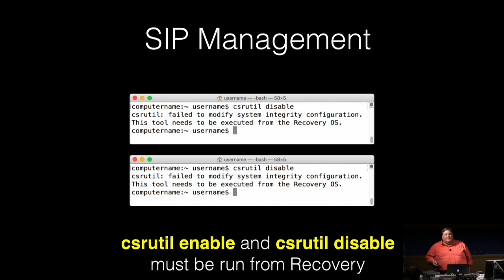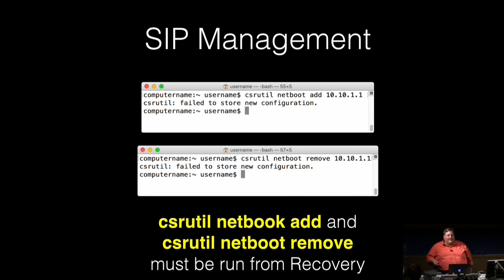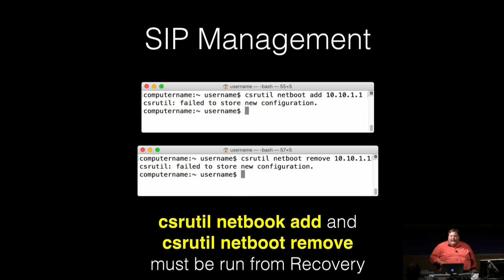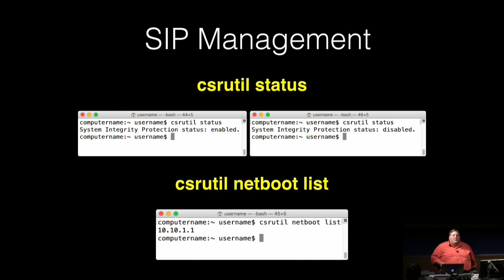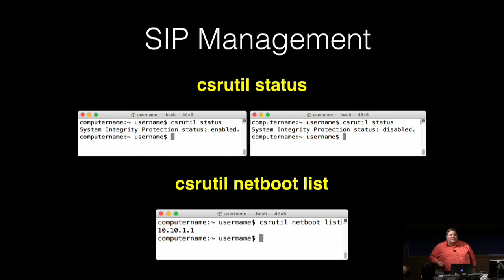If you try to run csrutil enable or disable commands while booted from a regular boot drive, you will receive a message that these commands need to be run from recovery, and the current SIP configuration will remain unchanged. Likewise, if you try to run csrutil netboot add or remove commands from a regular boot drive, you will receive a message that csrutil was unable to save the configuration. What you can run from a regular boot drive are csrutil's reporting functions — csrutil status can be run without root privileges to report whether SIP is on or off, and csrutil netboot list reports which IPs have been set as allowed NetBoot sources.